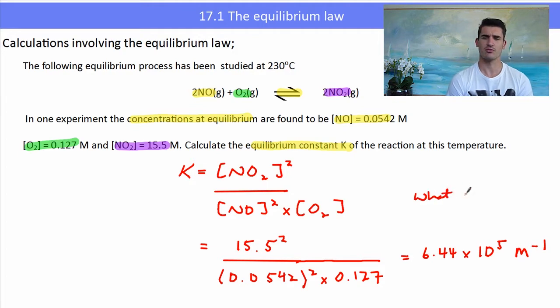What does that K value mean about the extent of reaction? Well, a large K value implies that this equilibrium lies in favor of the products.